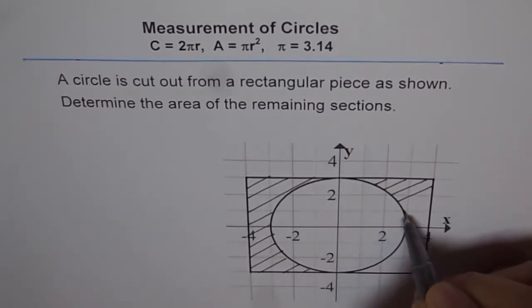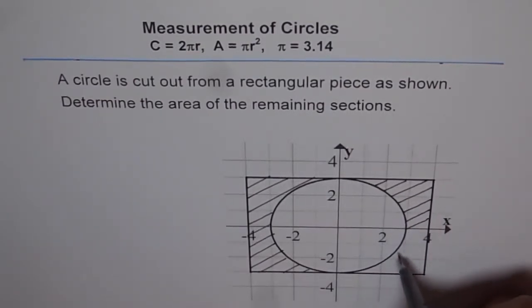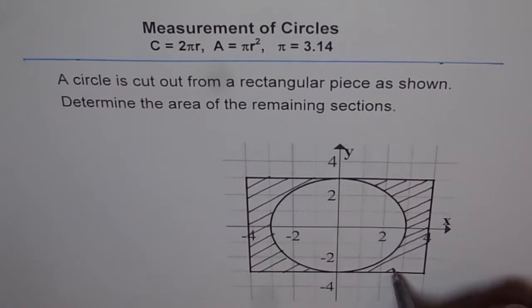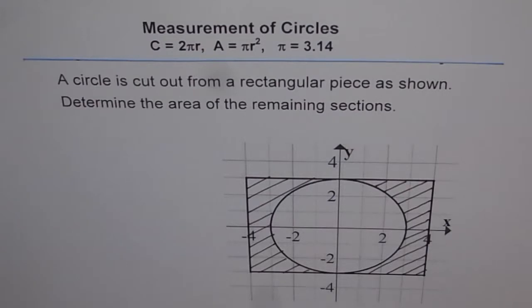You guessed it. First thing is, you have to find the area of the rectangle, and from there you have to subtract the area of the circle. That's the way to do it.